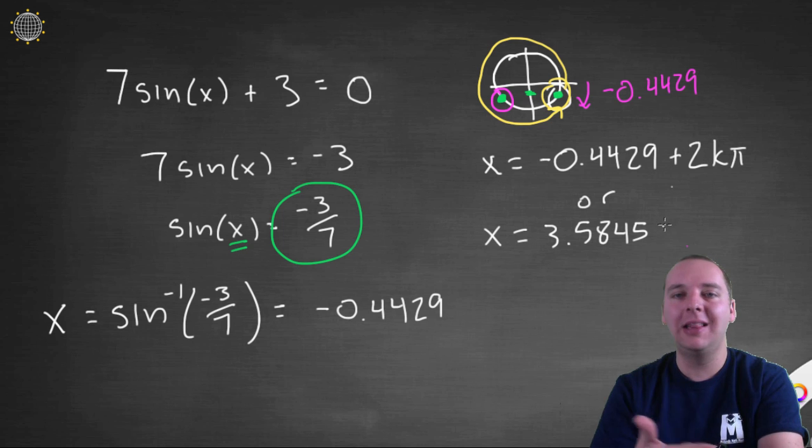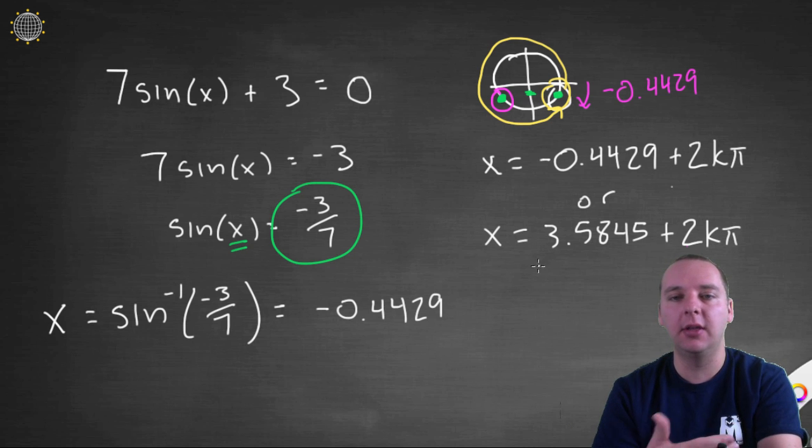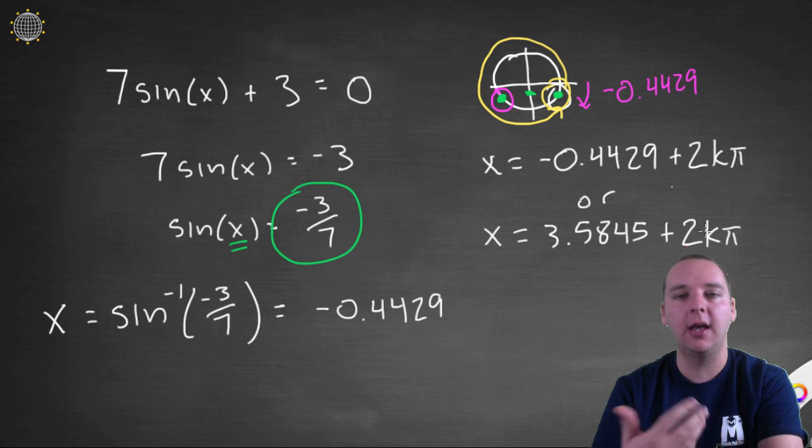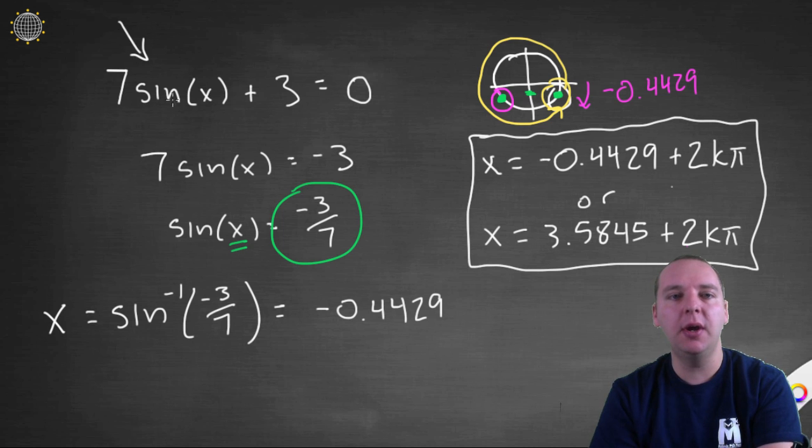But again, we're allowed any multiple of 2 pi beyond that. So we'll put plus 2k pi, where k is any integer. K could be 0, and you get 3.5845. Or k could be 1, and you add 2 pi. K could be 2, you could add 4 pi, or it could be 6 pi, 8 pi, 10 pi, so on and so forth. So these would be the answers to this original trig equation.